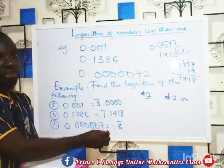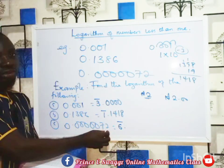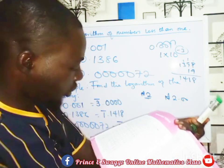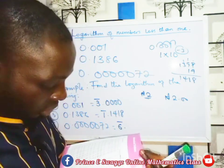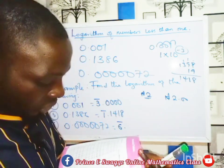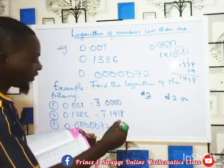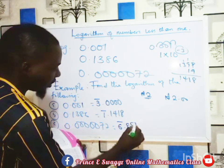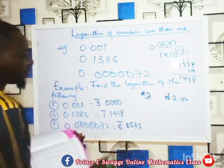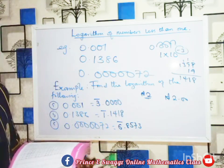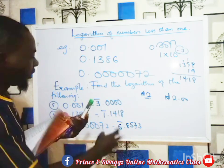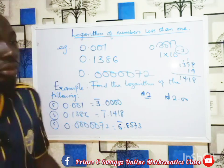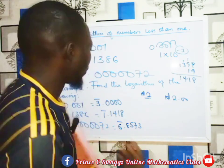For the last number, the real digits are 72 under column zero. Going to 72 in the log table under column 0 gives 8573. So the mantissa is 8573, and the full logarithm of 0.000072 is bar 6.8573. Those are the logarithms of the given numbers.